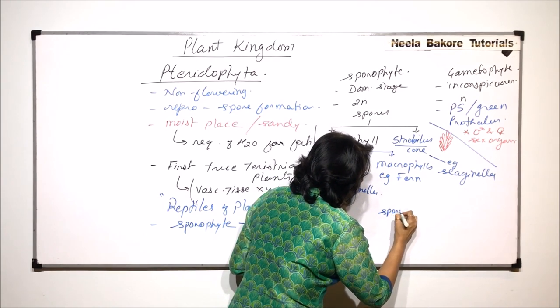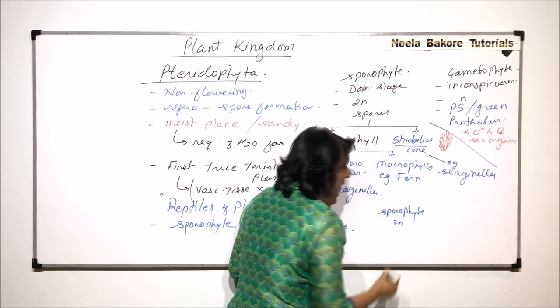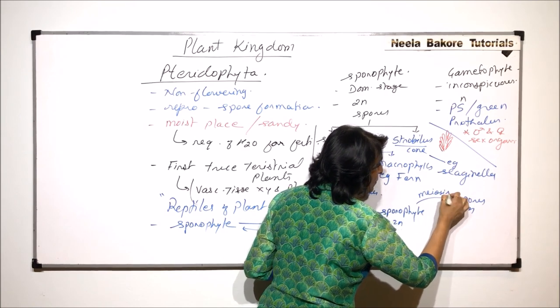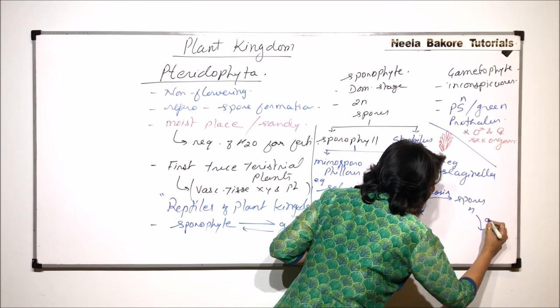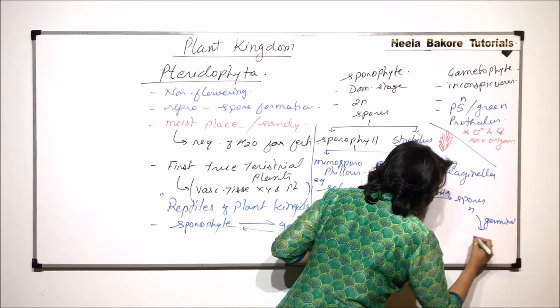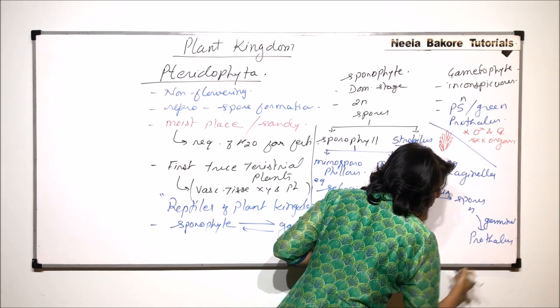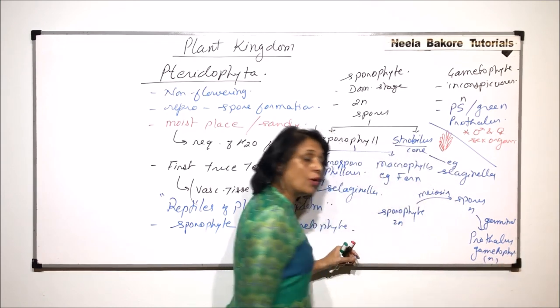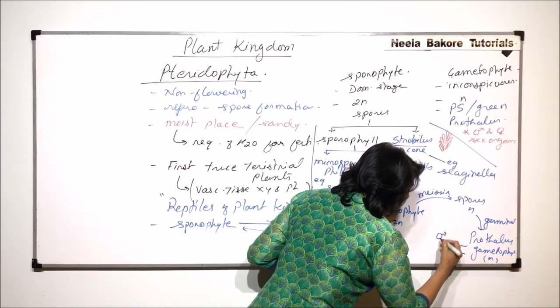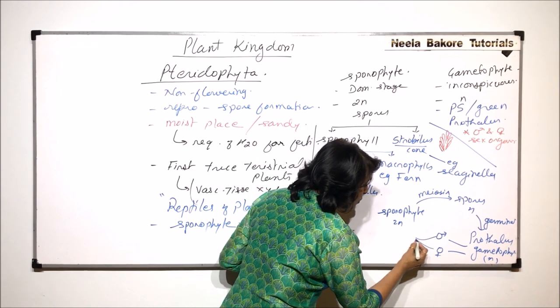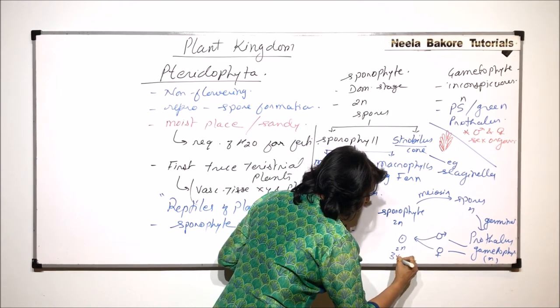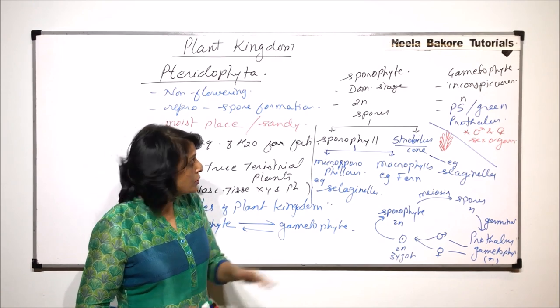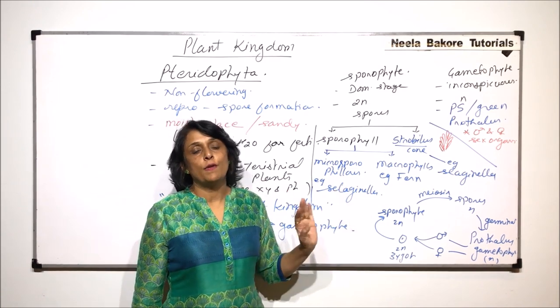Now how exactly the life cycle takes place is that the sporophyte, which is diploid, produces spores. The spores are haploid, and here there would be meiosis. The spore germinates to form the haploid prothallus, and this prothallus is the gametophyte. This gametophyte is also haploid. The gametophyte produces the male gamete and the female gamete. These gametes fuse to form a 2N zygote, and this zygote gives rise to the sporophyte. The detailed structure we will take up in the next couple of videos, but this is how the life cycle of pteridophyte is going to be completed.